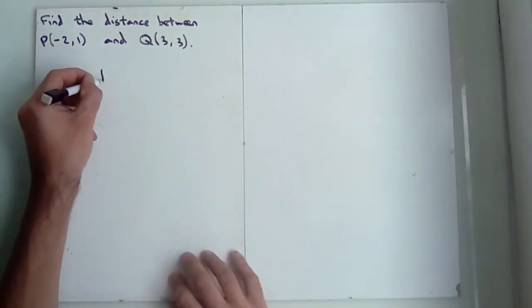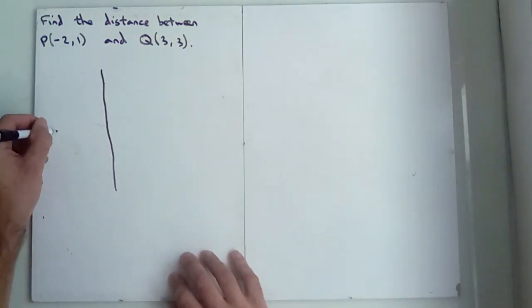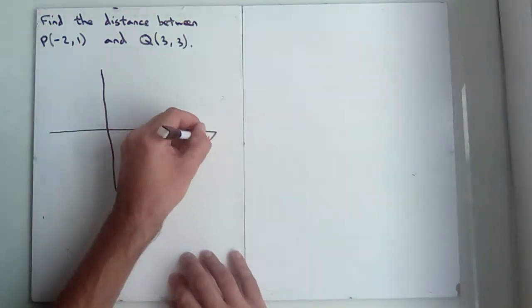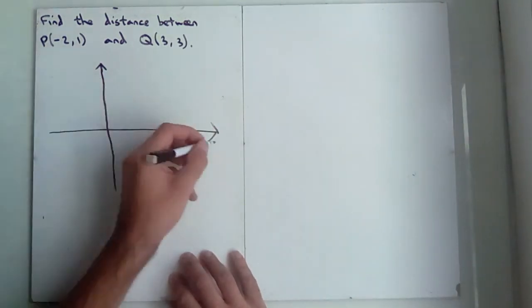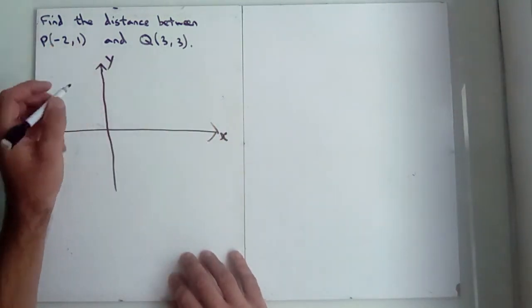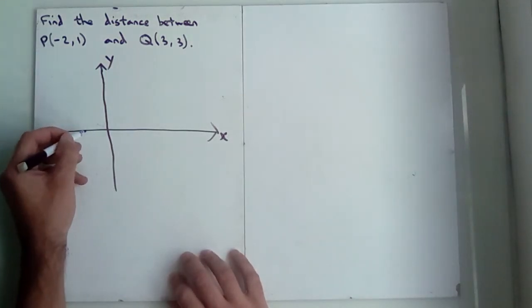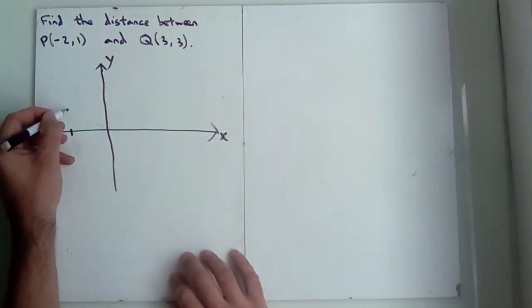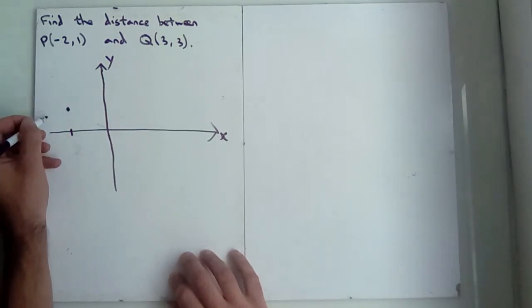So if we just give ourselves some axes like that. It doesn't have to be perfect, we've got the x-axis and the y-axis. So minus 2, 1 is going to be 1, 2 along and 1 up, so somewhere around there, that's minus 2, 1.